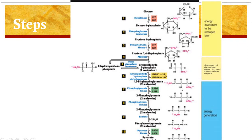In the first step, glucose is phosphorylated to glucose-6-phosphate. Glucose is phosphorylated to glucose-6-phosphate in the presence of the enzyme hexokinase. Hexokinase splits the ATP molecule to ADP, and the free phosphoryl group obtained is introduced into the glucose molecule to form glucose-6-phosphate. Kinases are nature's tool for introducing the phosphoryl group into organic molecules, and this kinase reaction is irreversible in nature.